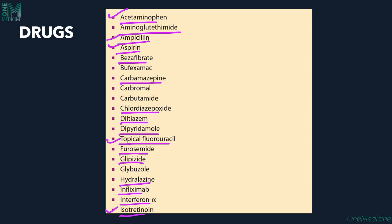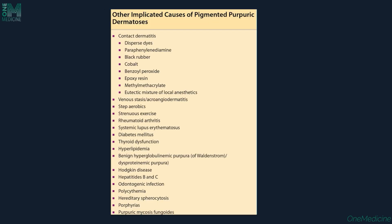Drugs like isotretinoin and topical 5-fluorouracil, which are commonly prescribed, can cause PPD and must be kept in mind. Contact dermatitis to certain substances can also mimic PPD — including paraphenylenediamine, black rubber, cobalt, benzoyl peroxide, epoxy resin, methacrylate, and eutectic mixture of local anesthetics (EMLA).